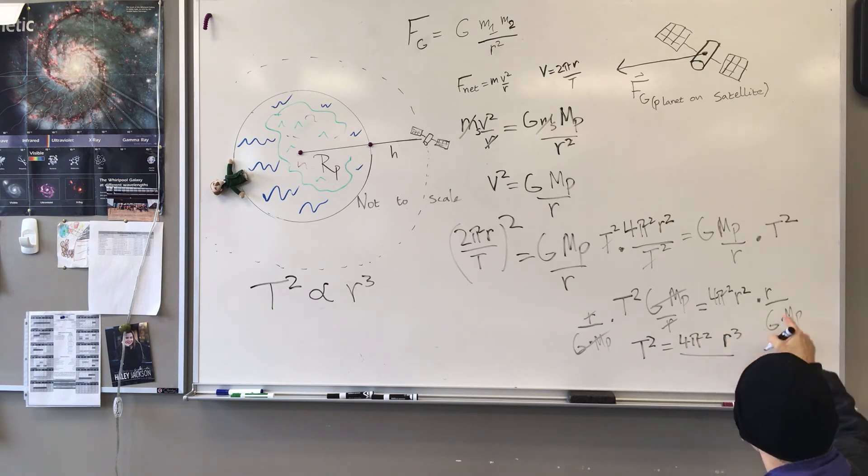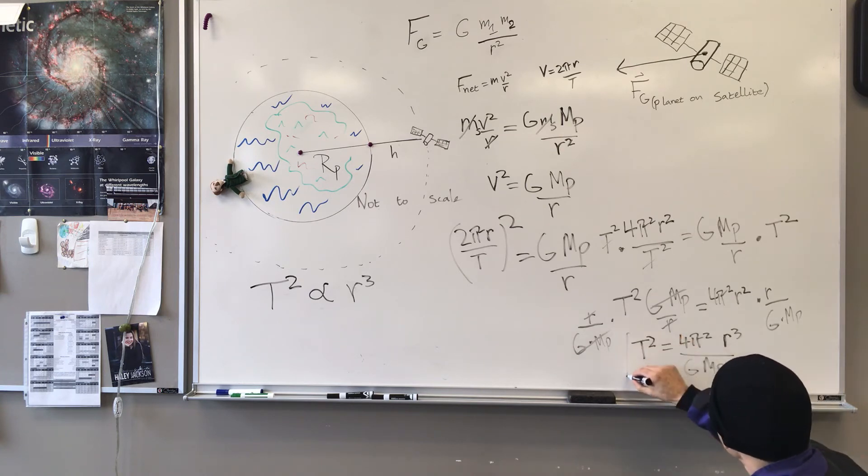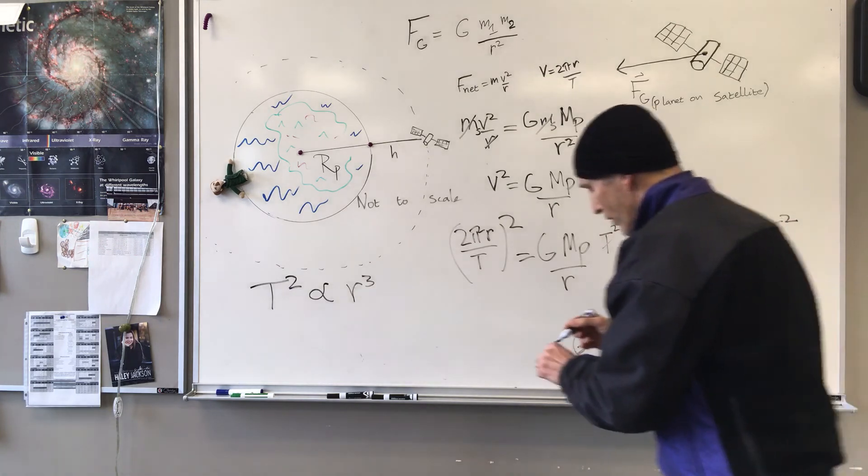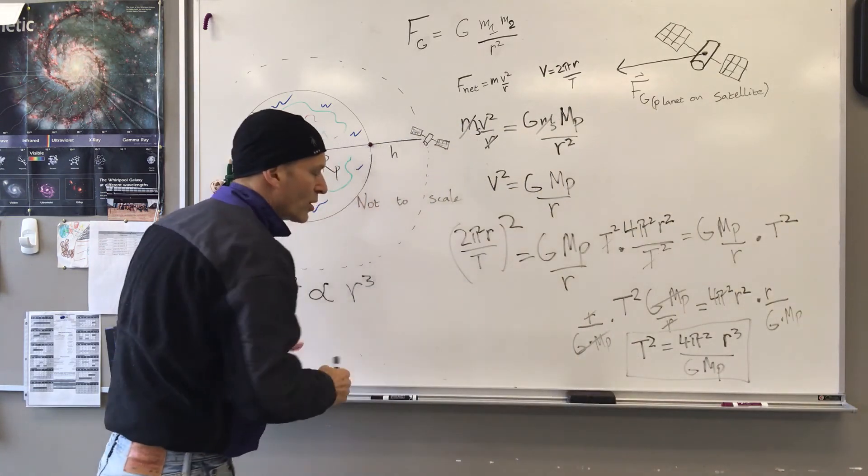And then G, mass of the planet, on the bottom. That looks like what we need. I've got T squared on the left and R cubed on the right. Let's write that over here in the center and examine it a little more closely.